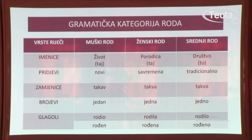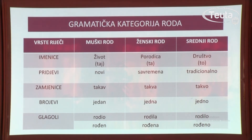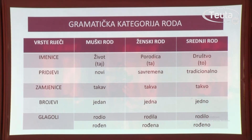Zadržat ćemo se malo kod pokaznih zamjenica. U koloni imenice: taj, ta, to. Dakle, život – taj, porodica – ta, društvo – to. O ovoj pokaznoj zamjenici govorit ćemo i vezano za sljedeću tabelu. Osim tri roda – muški, ženski i srednji – i pridjevi, zamjenice i brojevi kongruiraju u rodu, pa možemo slobodno u prvoj koloni izvući rečenicu: rodio se jedan takav novi život, ili: rođen je jedan takav novi život.